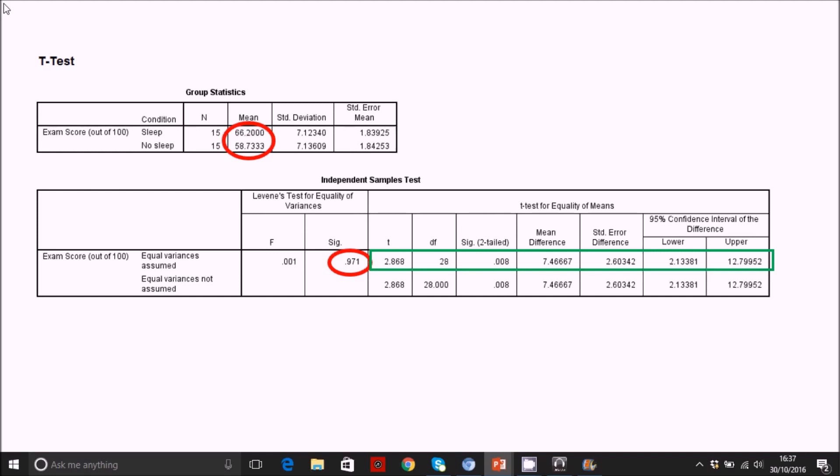For ours it's fine, so we'll use this row. To report the t-test, you just need to pick out the relevant bits in this table. The most important are the t-statistic, which is here, the degrees of freedom, which are 28. You'll report the degrees of freedom as a standard convention. You'll put the degrees of freedom in brackets, then the t-statistic, and then the p-value. Then what you want to do is report a measure of effect size. It's becoming increasingly widespread to use and report effect sizes, so it's good to get into the habit of reporting these.